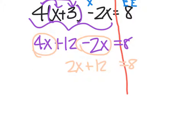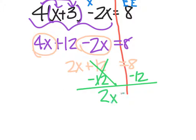Now I can solve. My first step is to subtract 12 from both sides. The 12's cancel on the left, so I have 2x equals 8 minus 12, which is negative 4. My final step is to divide both sides by 2, and I get x equals negative 2. Don't forget to go back and plug that in to make sure it works.